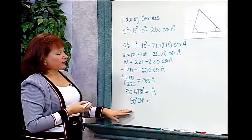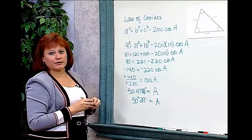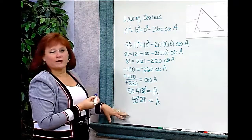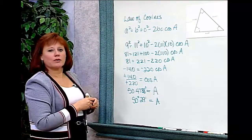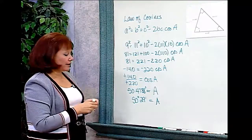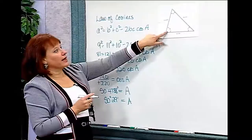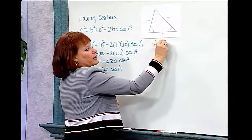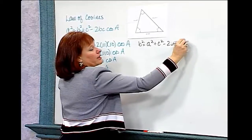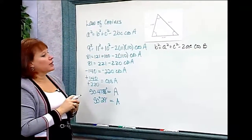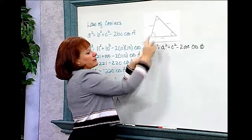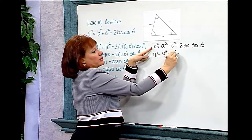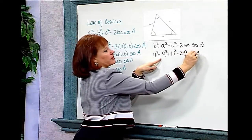I've used the Law of Cosines effectively to find angle A. Now I have a choice — I can use either the Law of Sines or the Law of Cosines to find the remaining angles. We haven't had much practice with the Law of Cosines, so I think we'll do it again to find angle B. The form we'll use is: B squared equals A squared plus C squared minus 2AC cosine of angle B. B squared is 11 squared, A is 9, so I'll have 9 squared, and C squared would be 10 squared, minus 2 times 9 times 10 times the cosine of B.